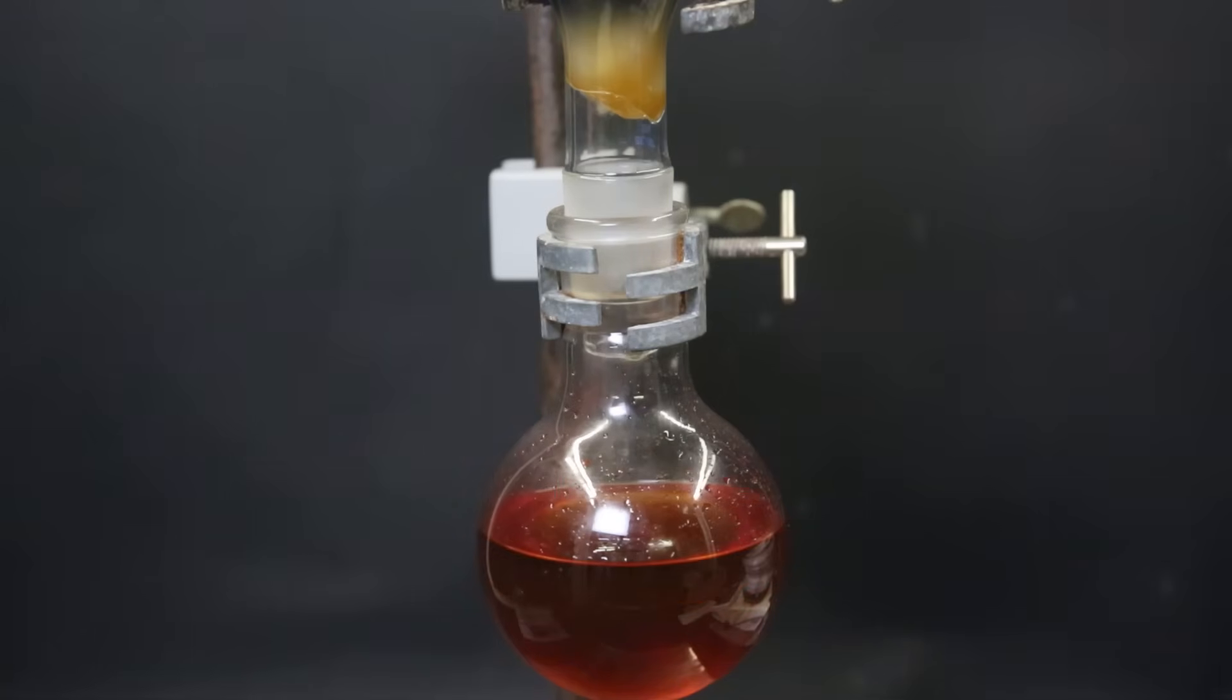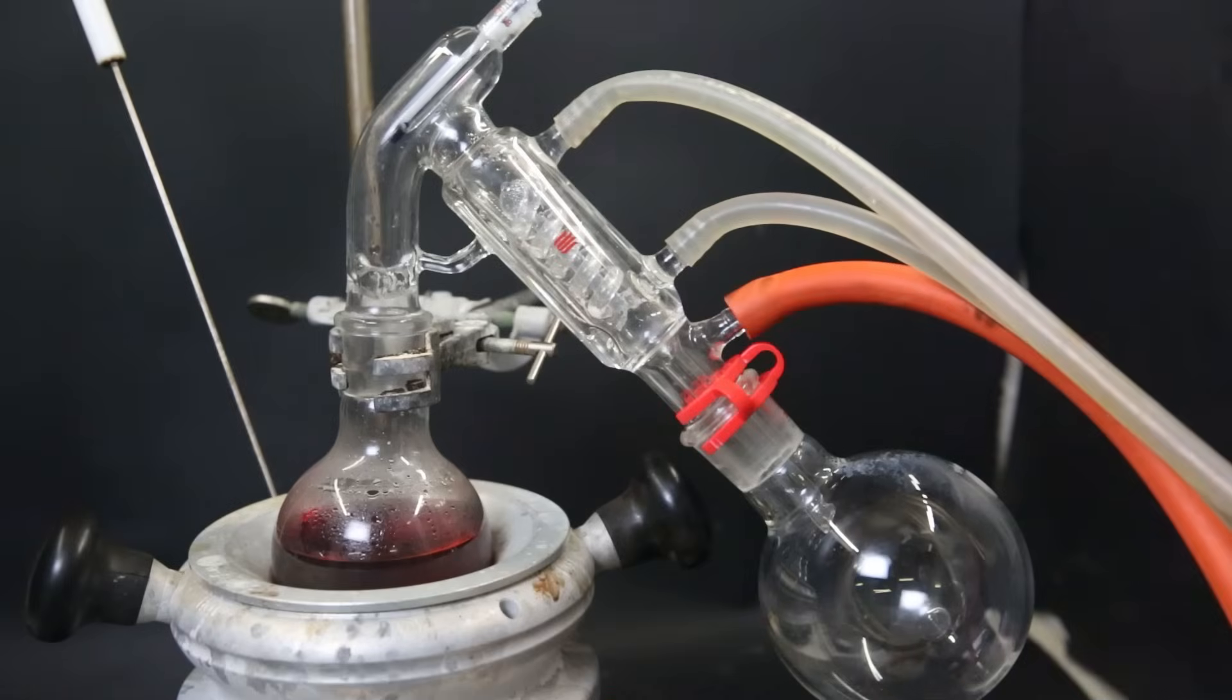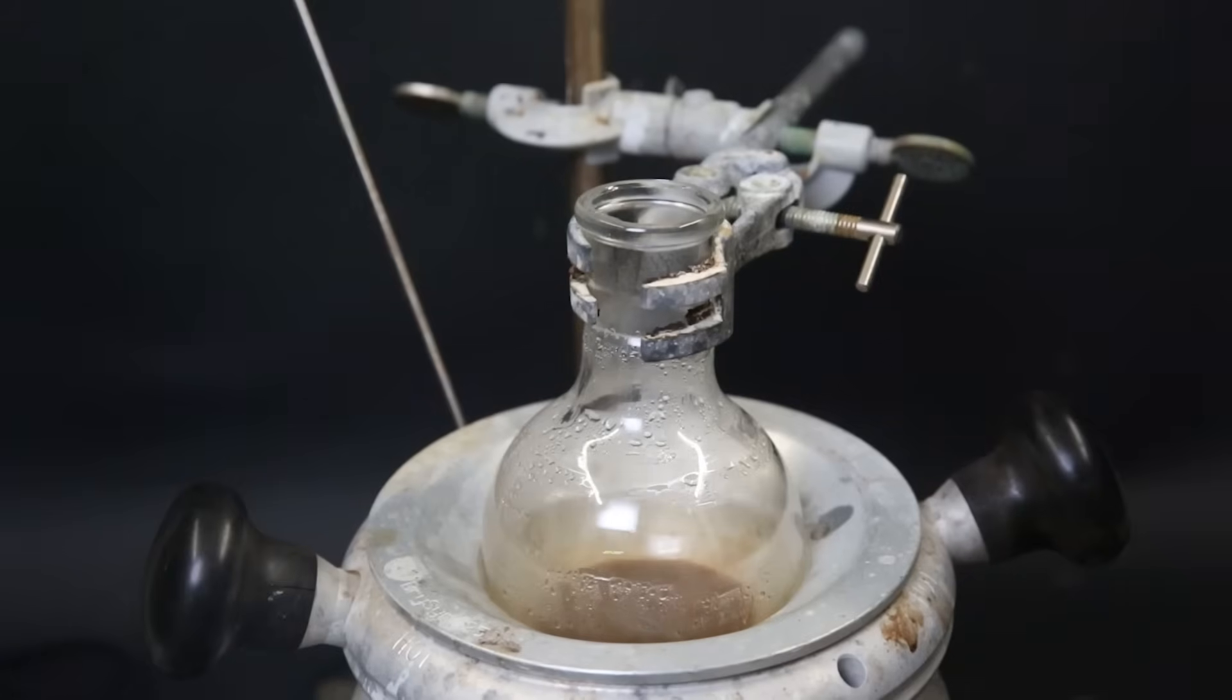Now to remove all of the excess pyridine and other contaminants, I will distill it over with a short path vacuum distillation. After a while, all of the pyridine has boiled off and I am left with a brown liquid.